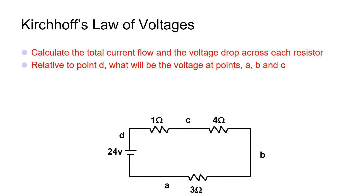In this example, let's calculate the total current flow and the voltage drop across each resistor. We begin by finding the total resistance: 3 ohms plus 4 ohms plus 1 ohm equals 8 ohms. Then, using Ohm's Law, total current equals 24 volts divided by 8 ohms, which equals 3 amps. We can then determine the voltage drop across each resistor: 3 amps times 3 ohms equals 9 volts across the first resistor, and 3 amps times 4 ohms equals 12 volts across the second resistor.